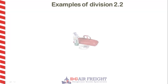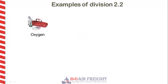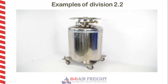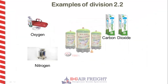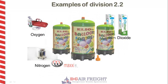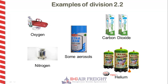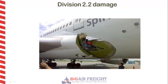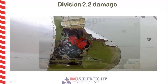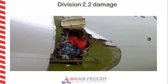Examples of division 2.2 gases are oxygen, carbon dioxide, nitrogen, helium, and some aerosols — those that come out as a paste or a cream. The cause of one accident has been determined to be an exploding oxygen tank in the cargo area. It had sustained a sudden failure, resulting in the forceful discharge of its pressurised contents into the aircraft hold, rupturing the fuselage.